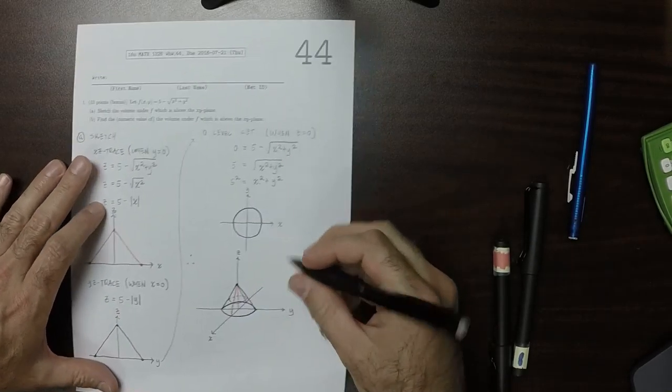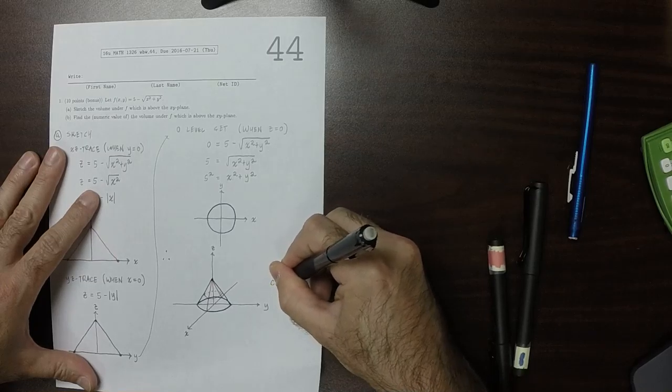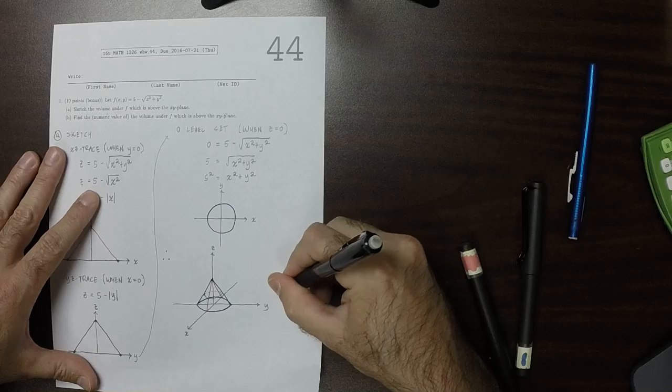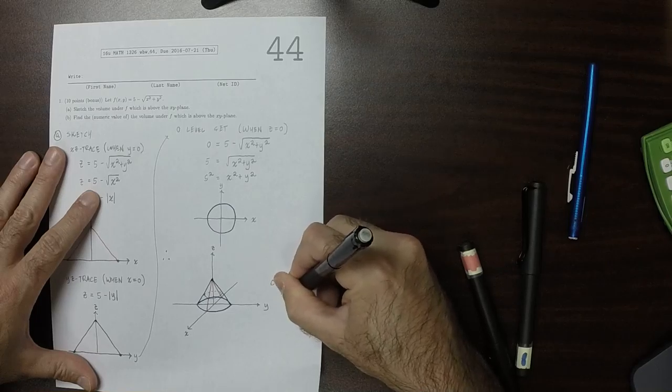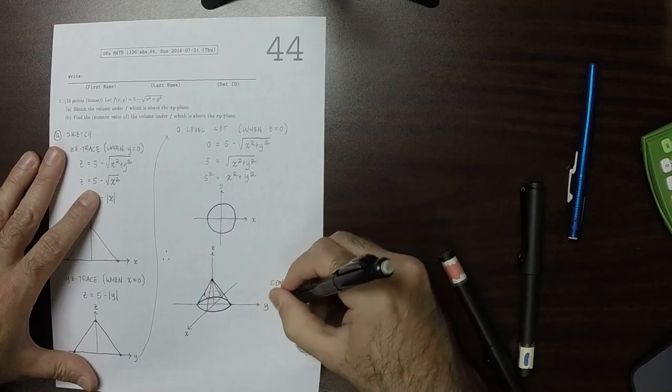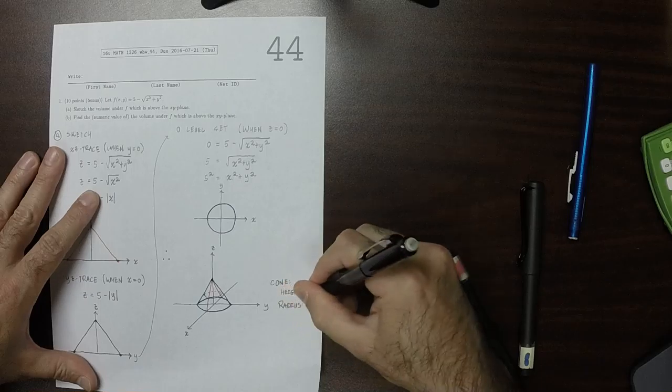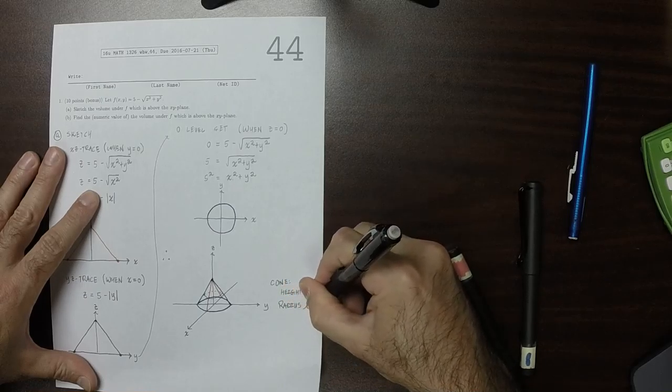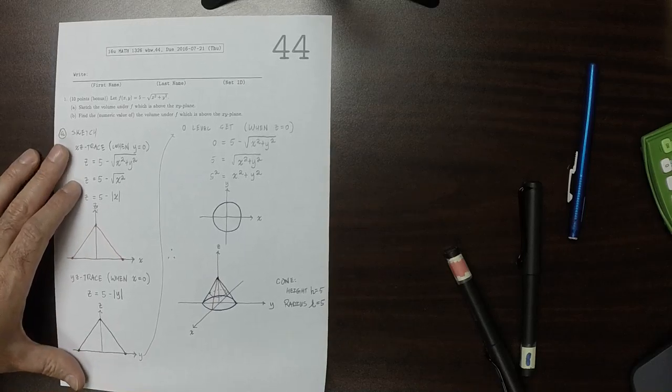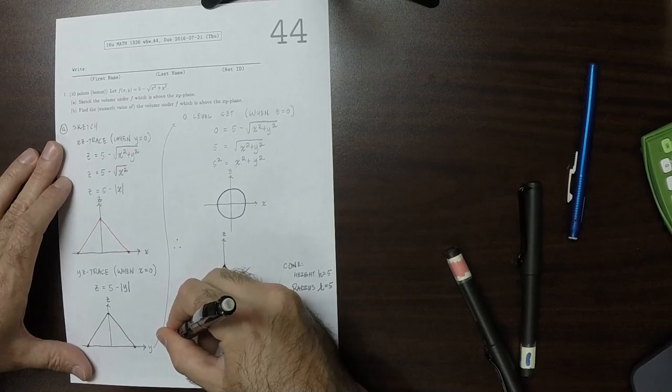Now, this is a cone that has height H is 5, and radius r is 5. So the height and the radius are the same. Which is good, because for part b,